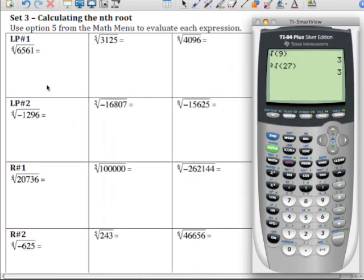And to use this function, we need to enter in the index first, and then hit the math key. And you'll notice choice 5 has an x for the index, where choice 4, which we used in the last clip, had an index of 3 appearing there. This one's x because the calculator allows you to enter in whatever you need to. And we needed to enter a 4 in this one.